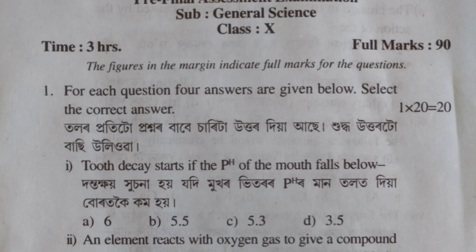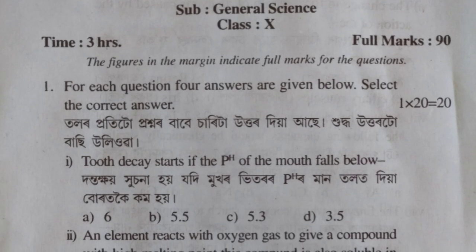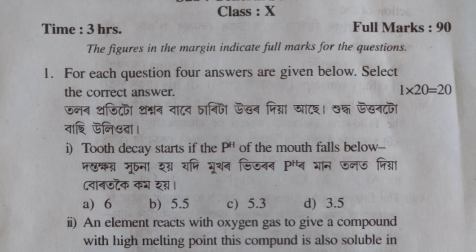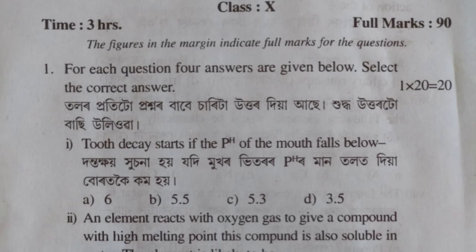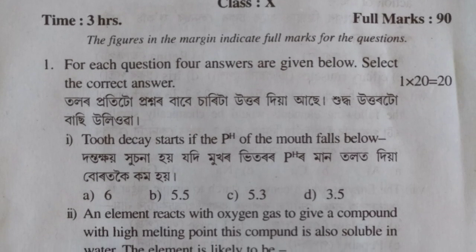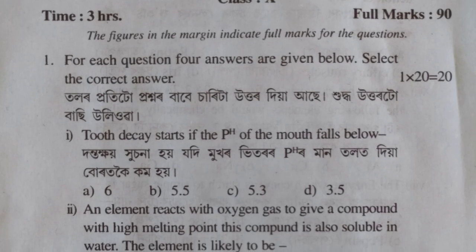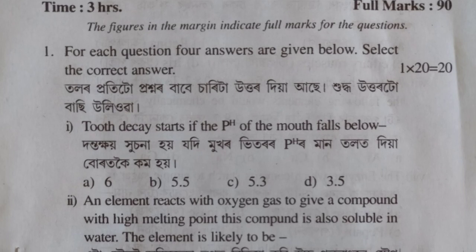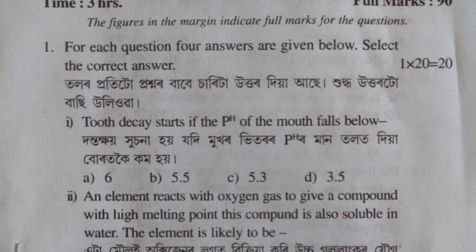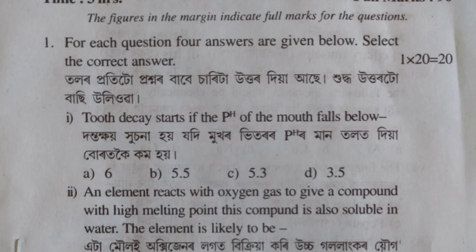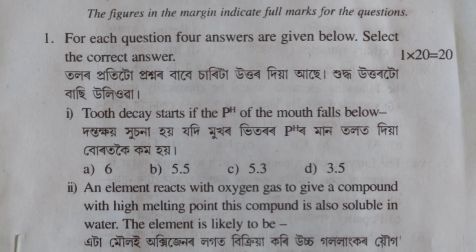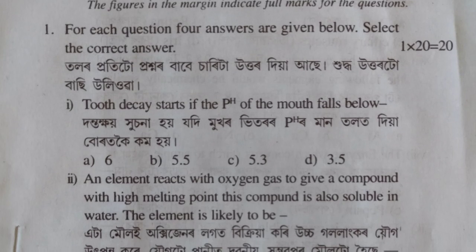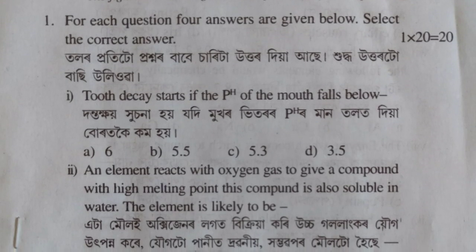The first question is: if the pH of mouth falls below a certain value, tooth decay starts. The correct answer is option number B, 5.5.